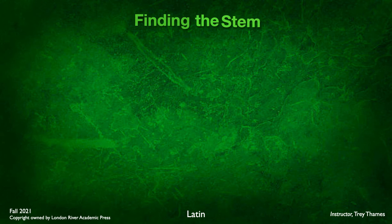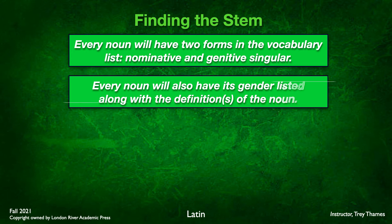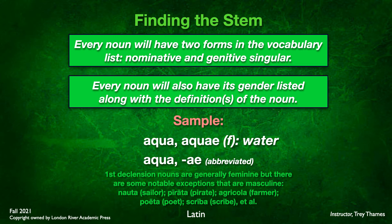How do we find the stem of a noun? When you first encounter a word in your glossary, you'll see two forms listed: a nominative and a genitive singular. Every noun will also have its gender listed along with its definition. For example: aqua, aquae, f. — water. You'll often see these abbreviated in a dictionary, where only the genitive ending is shown rather than the full second form.